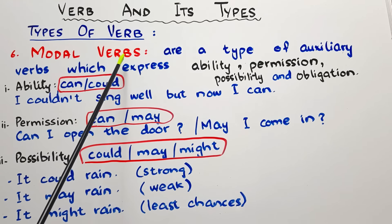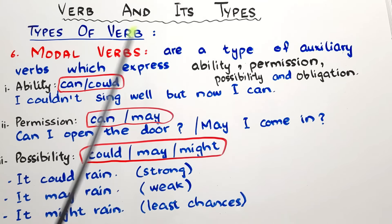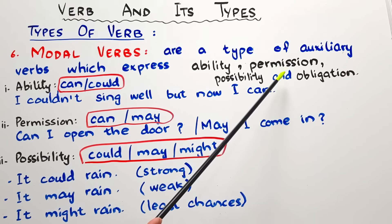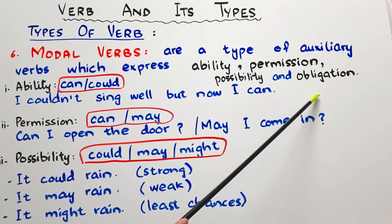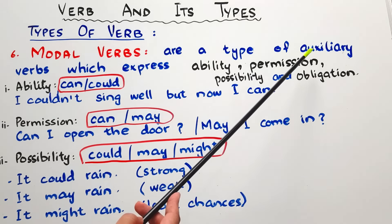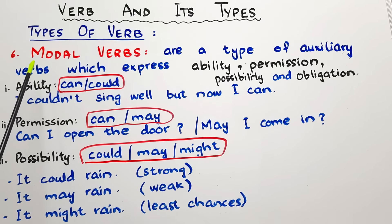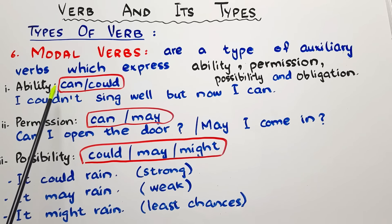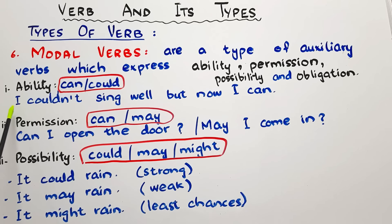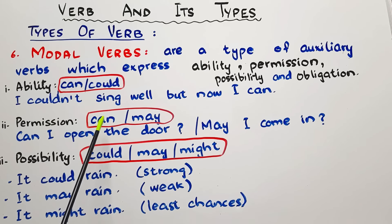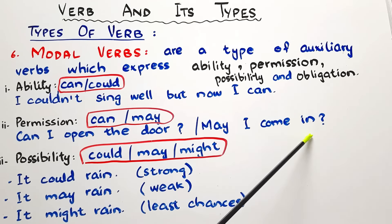The next type of verb is modal verbs. Modal verbs are a type of auxiliary verb that express ability, permission, possibility, and obligation. The modal verbs you can use for ability are 'can' and 'could.' 'Could' is used for the past tense and 'can' is for the present. 'I couldn't sing well, but now I can.' For permission, we can use 'can' or 'may,' like 'can I open the door' or 'may I come in.' We can also use 'could' for permission when we want to be very polite.